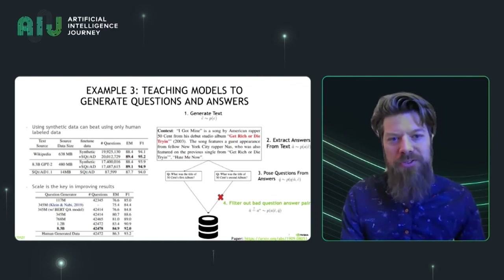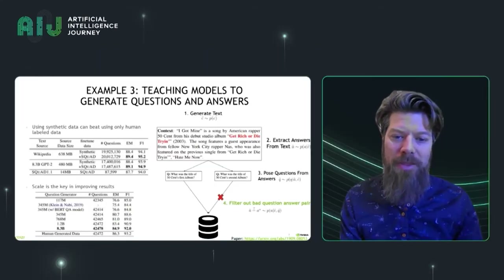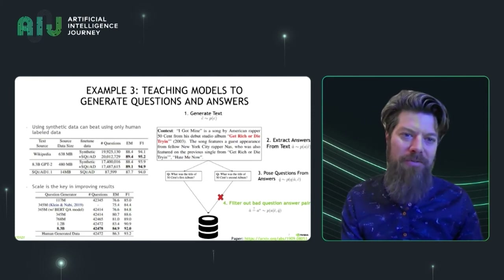We can also train these models to generate questions and answers, which helps us make better question answering systems. In this case, we have four different large language models: one is generating text, one is extracting potential answers from the text, one is posing questions from those answers given the text, and the last one is filtering out bad question-answer pairs. It turns out that if we train a question answering model using synthetic questions, synthetic answers, and synthetic text, we can actually get better question answering performance than if we train on just the real text alone. That's kind of amazing and shows the power of these large language models.